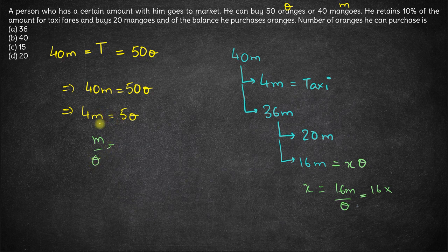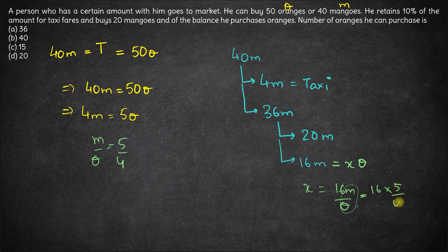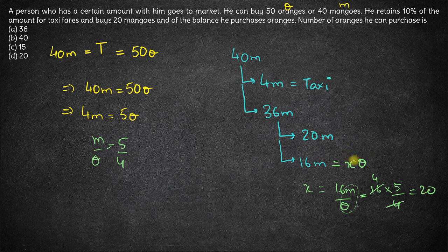Now what is M upon O? M upon O is 5 by 4. So instead of M upon O, we can write 5 by 4. 16 goes by 4, 4 times, 4 into 5 is 20. Hence X comes out to be 20.